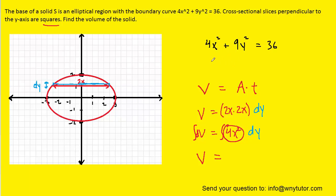Well, we go back to the equation, and we can see that 4x^2, if we subtract the 9y^2, would be equal to 36 minus 9y^2. So we can actually replace this 4x^2 with 36 minus 9y^2. And that way, we can integrate with respect to y.